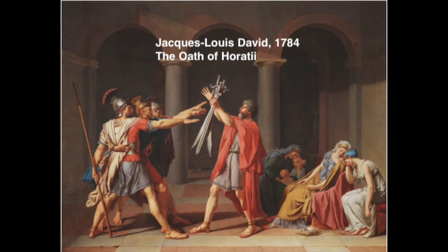The swords are symbols showing that the promise is about an upcoming battle. David enhances the narrative through the composition — the father anchors the scene as the focal point, and he also has a red cape which carries symbolic meaning. The closely grouped sons who stand strong balance out the women in the background who appear weaker.